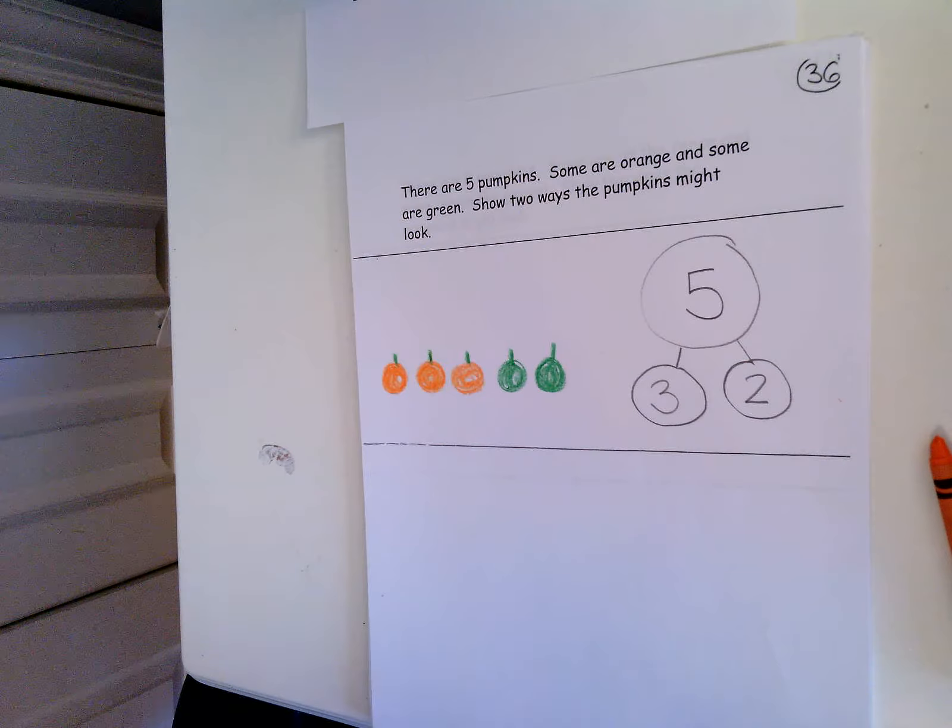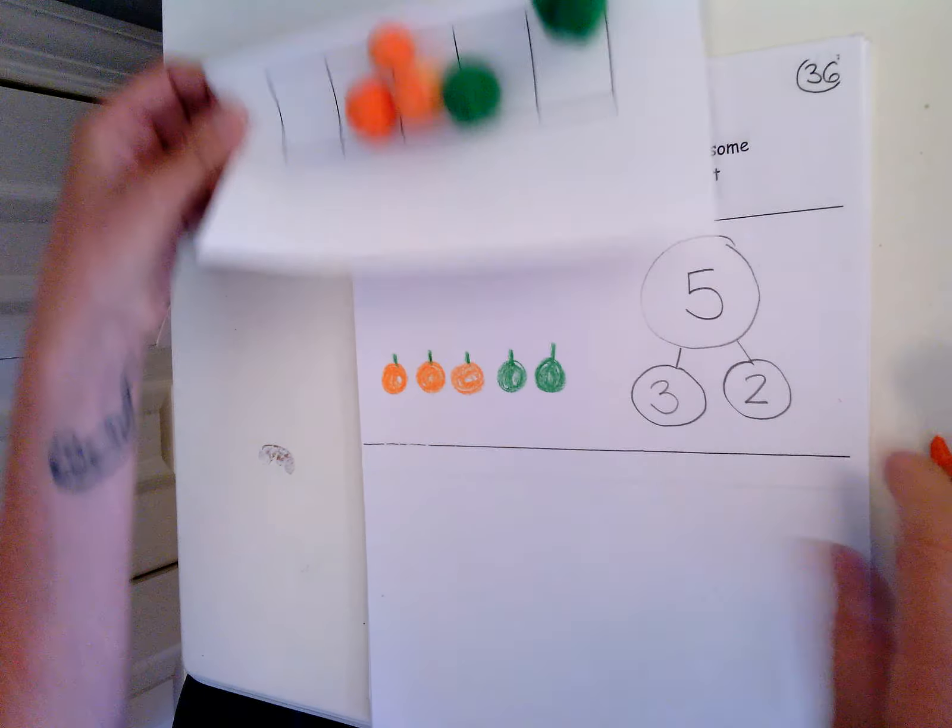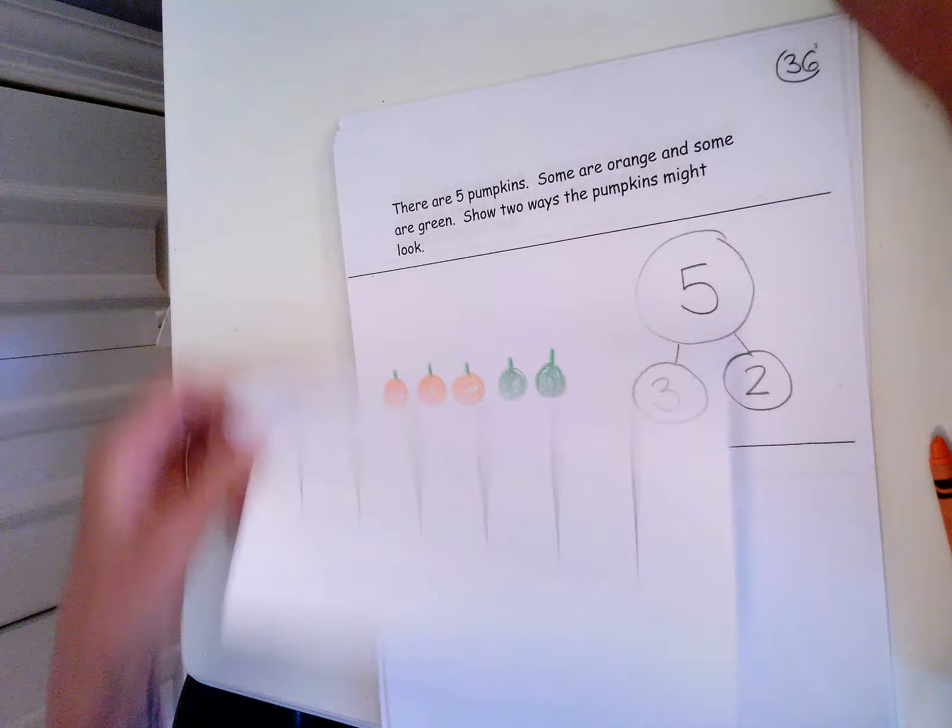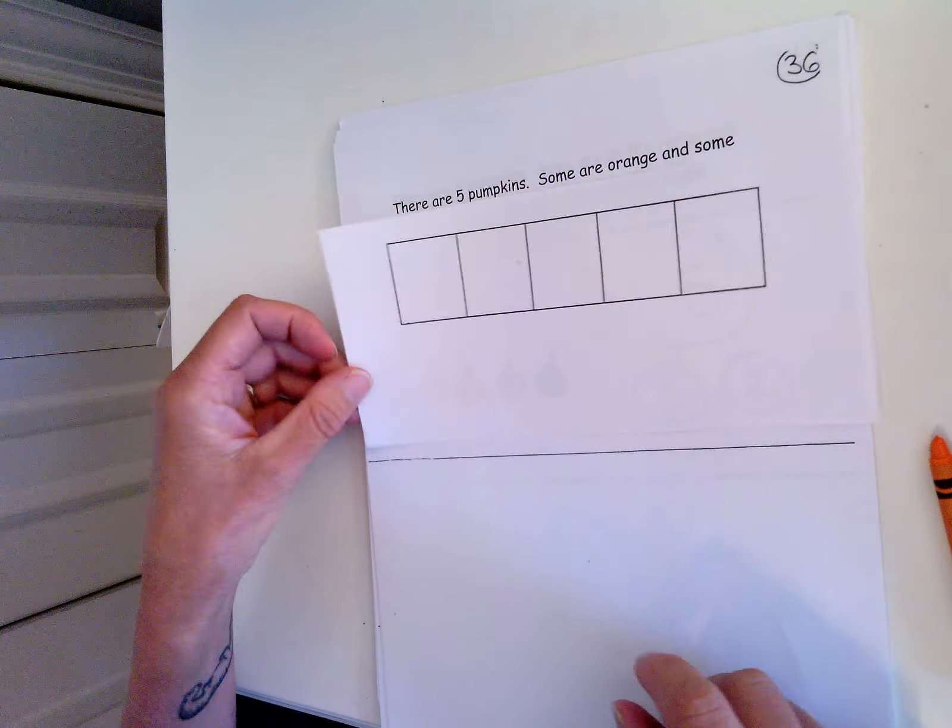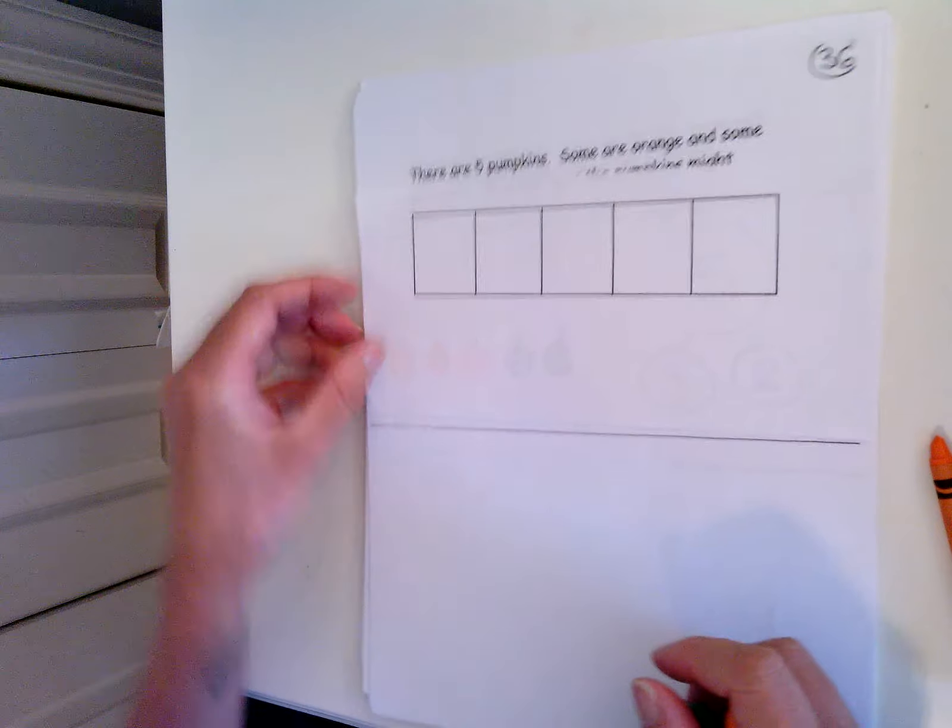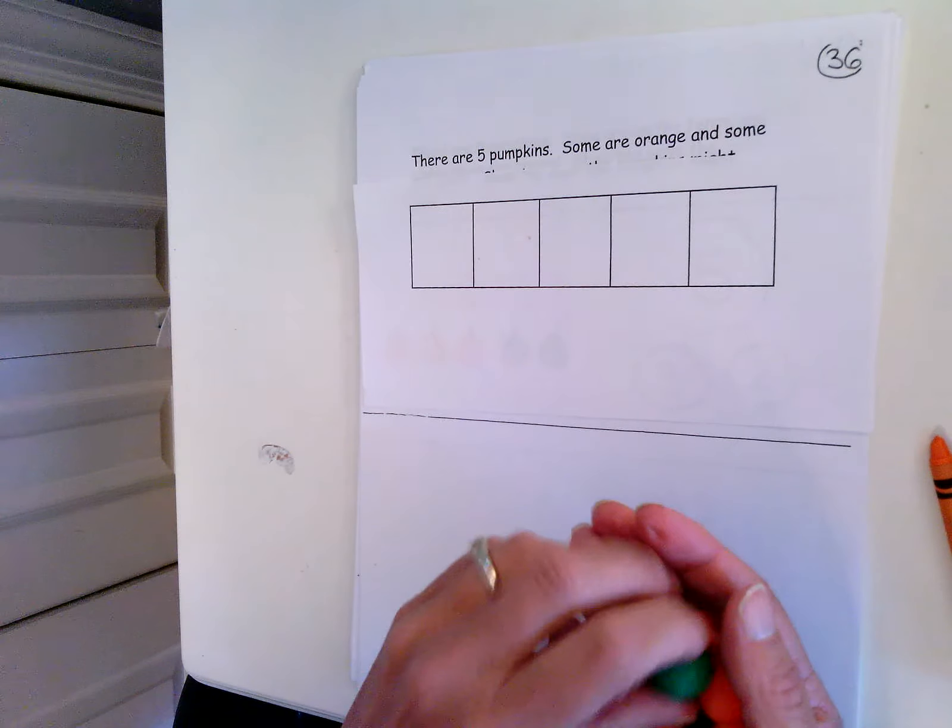That's how I'd make a number bond for that problem. So now we're going to do this same problem again. So I'm going to have a different combination. So there's still five pumpkins and some are orange and some are green. What other combinations could I do? There's all kinds of combinations. So you can play around and pick your own.